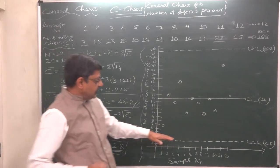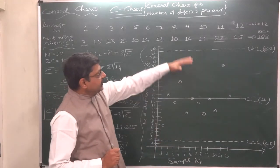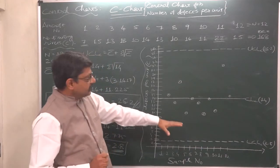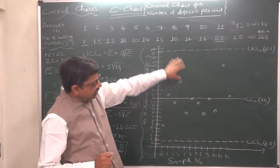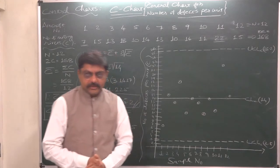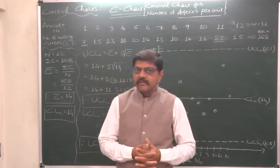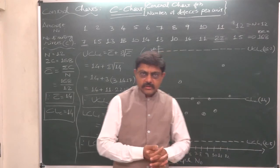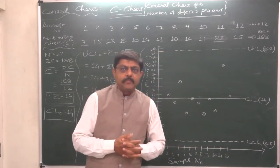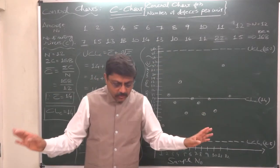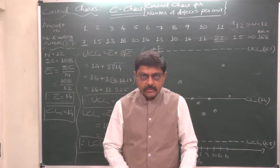We can conclude that the process is under control because all the sample points lie within upper control limit and lower control limit, or below the upper control limit. Otherwise, you know that we are very much stringent in drawing the conclusion. Even if only one sample point is either above the UCL or below the LCL, we conclude that the process is not under control. Here we conclude that the process is under control because of this situation.